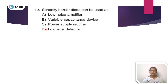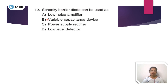Let me explain the Schottky barrier diode. In the Schottky barrier diode, we have 2 types of semiconductors — P type and N type semiconductor — and we also have a junction.